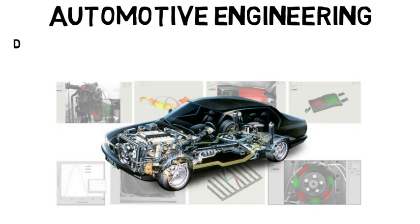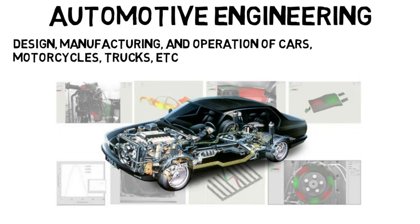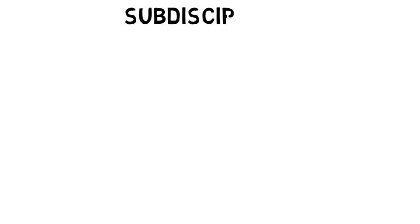Automotive engineering is about the design, manufacturing, and operation of cars, motorcycles, trucks, and other automobiles. There are a lot of sub-disciplines within automotive engineering, and there are many things you can work on when it comes to an automobile.